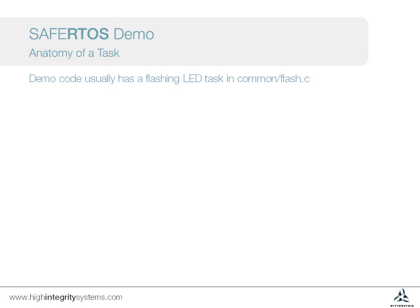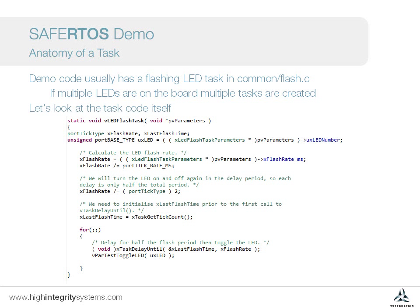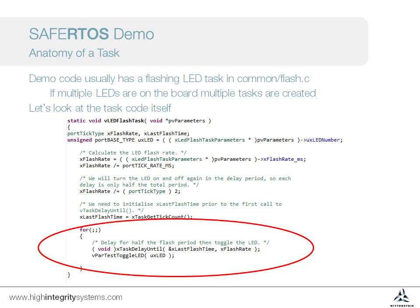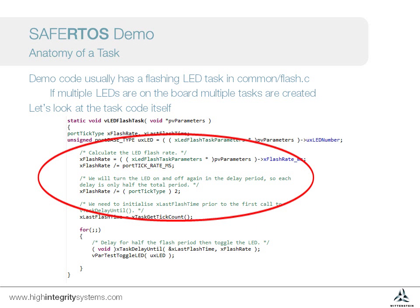One of the benefits of using an RTOS is modularity of code and ease of reuse. If multiple LEDs are on the board, then one task is created per LED. SafeRTOS has no limits on the number of tasks that can be created in a system. The main functionality is in a while(1) loop. This delays for a period using the xTaskDelayUntil API call, toggles a specific LED, and repeats forever. Remember, tasks should never return. The initial section of the task is concerned with using the parameters passed into the task to calculate what the toggle rate should be and which LED should be toggled.